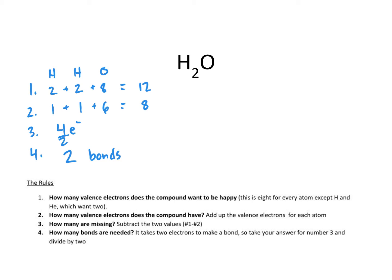Now, we have three different elements in H₂O, so somebody is going to take the middle place. We already know that hydrogen does not need that many electrons to be happy, so oxygen is going to step forward and say 'I want to be in the middle.' So we put oxygen in the middle. We need to draw two bonds — two lines — connecting each hydrogen to the oxygen in the middle.